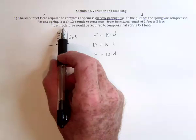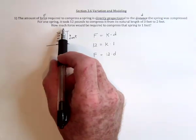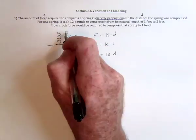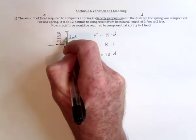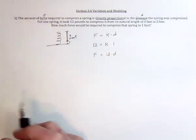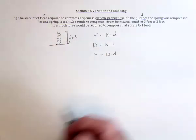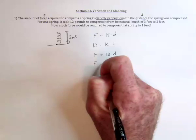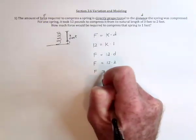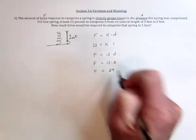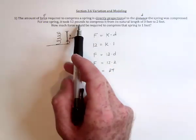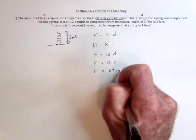And now the question goes on to say, how much force is it going to take to compress it down to one foot? So if we're compressing a three-foot spring down to only one foot, then we've compressed it a distance of two feet. So D is going to be 2. So it's going to be 24 for the force, and in here the force is measured in pounds. So it's going to take 24 pounds.